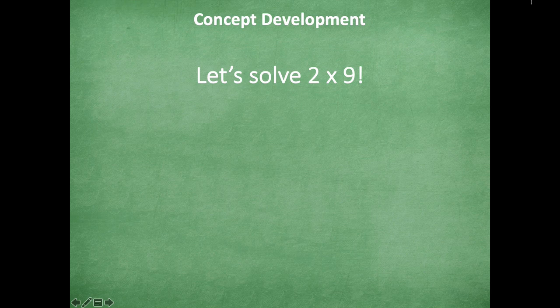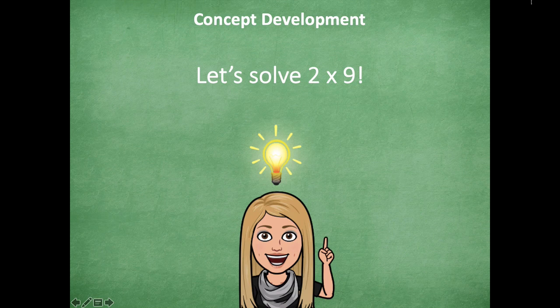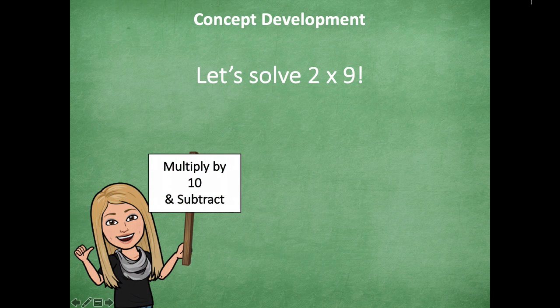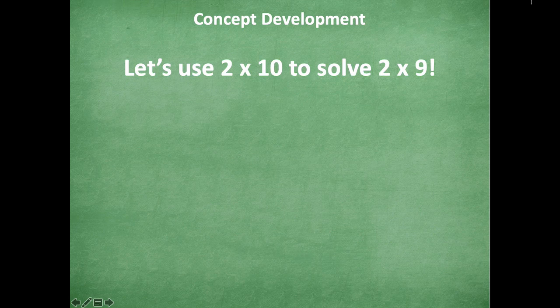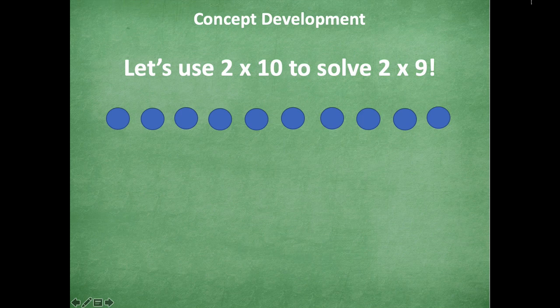So let's solve 2 times 9. I have an idea that might help make this easier. I think multiplying by 10 is super easy, right? Like 10, 20, 30, you could just skip count by 10. So we can multiply by 10 and then subtract, kind of like the strategy we used before. Let's look at how we can do that. We're going to use 2 times 10 to solve 2 times 9. I'm going to draw an array to help us with this. So I'm going to draw the first row of 10 and then another row of 10. So that represents 2 times 10.